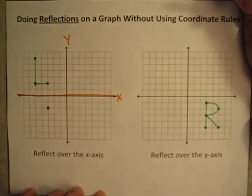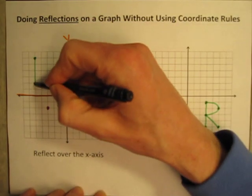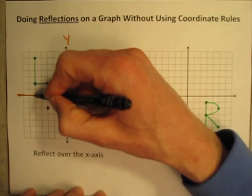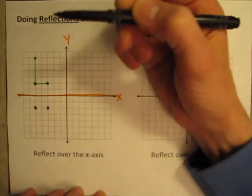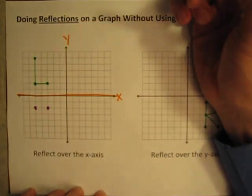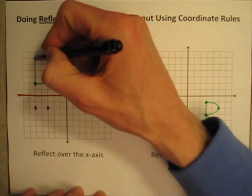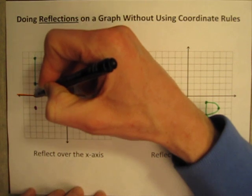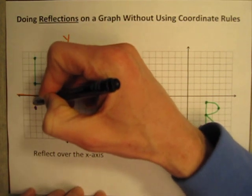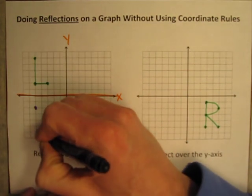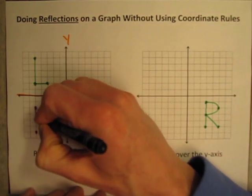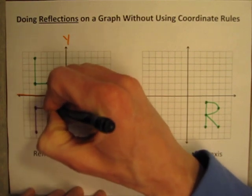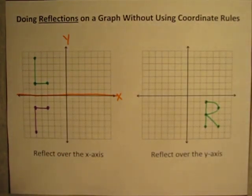There is my new point. This next point is also two spaces above, so let's go two spaces below — and there is that point. The final point is six spaces from the line of reflection, so let's count six spaces below. And here is my new letter L, nicely reflected over the x-axis. I didn't bother with the coordinates of any of the points — nice and quick.